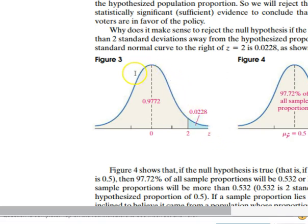I wanted to pull up a normal distribution curve to talk about what 'at least as extreme' means. If our p-value is 0.19, it means 19% of samples — 19 out of every 100 — would be as far away from the mean into the tail, or at least that far away, or even further into the tail. So a p-value of 0.19 means that 19 out of every 100 samples is at least as far away from the mean as the sample we got, or even further away.